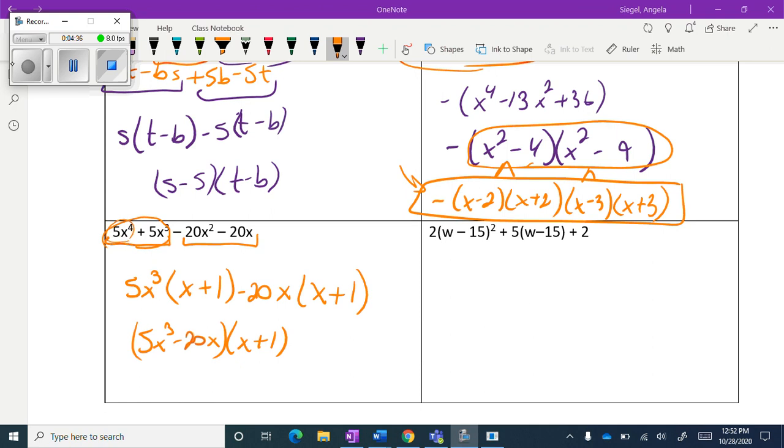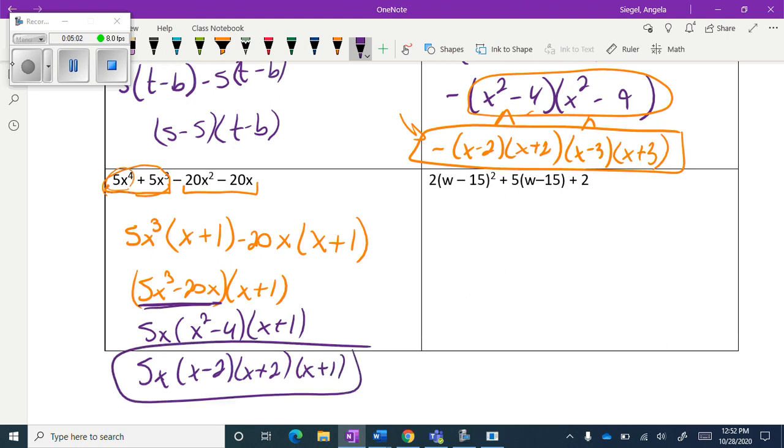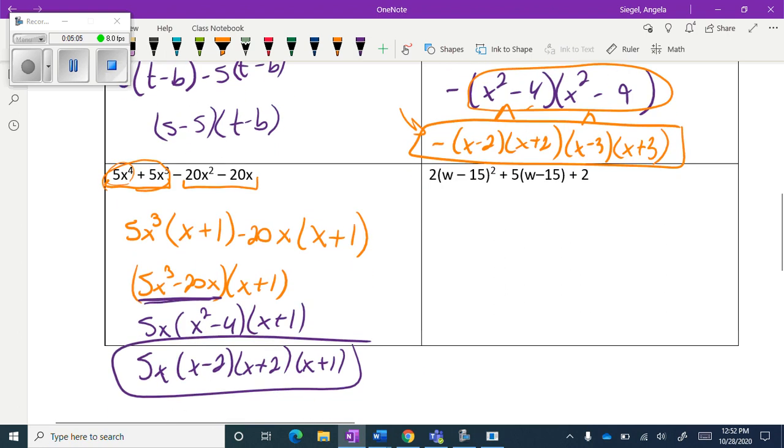I just took it as is and did the factor by grouping. Just know when you get down here you still have to take it and break it down more because it has a 5x in common. So I'm left with x squared minus 4 and then x plus 1. And again, we have a perfect square binomial, so I'm going to have 5x, x minus 2, x plus 2, and x plus 1 for my final answer. Really, you just decide what's best for you. As long as at the end we're broken in both ways, we'll end up in the same place.